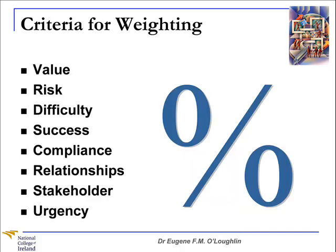When you are weighting criteria for the requirements, here's a list of eight criteria that you might find useful: Value, Risk, Difficulty, Success, Compliance, Relationship, Stakeholder, and Urgency. What we want to do is look at each requirement we have gathered and assign a percentage or a score for that requirement according to each of these criteria, then add it all up to see which requirement has the highest priority down to the requirements with the lowest priorities.